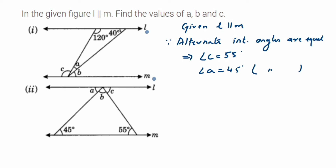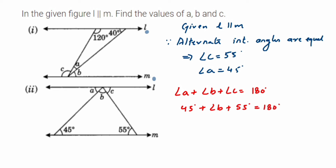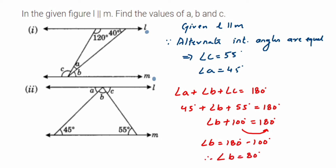Now we have to find angle b. Using the same concept — the sum of all angles lying on a straight line is 180 degrees — angle a plus angle b plus angle c equals 180 degrees. So 45 plus angle b plus 55 equals 180. That gives angle b plus 100 equals 180, so angle b equals 80 degrees. So this was a simple question. I hope it's clear. If you have any questions or doubts, you can drop a comment below. Thank you so much for watching.